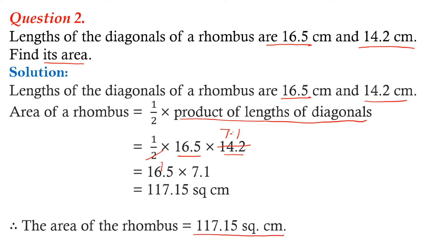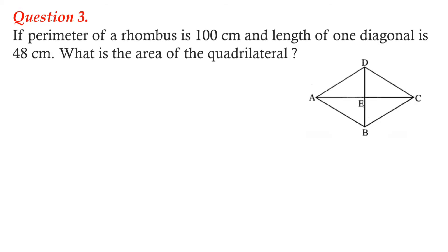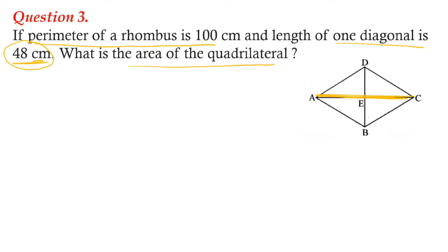Here we have the next question. The perimeter of a rhombus is 100 centimeters and the length of one diagonal is 48 centimeters. We use the formula: area equals one upon two into diagonal one into diagonal two. The length of one diagonal AC is given as 48 centimeters. We need to find the length of the other diagonal DB before we can find the area.